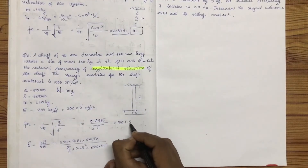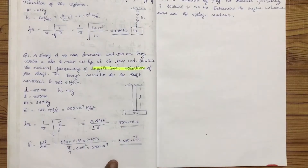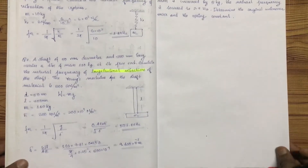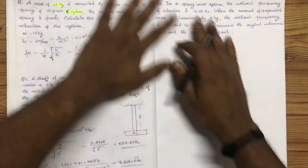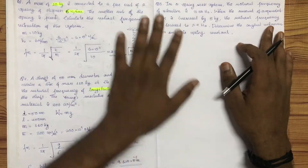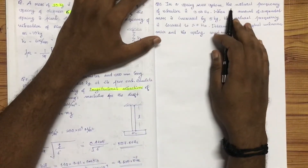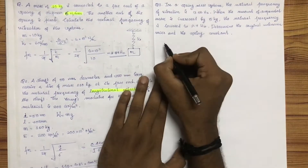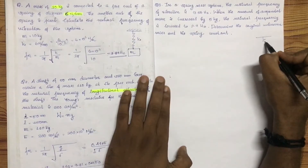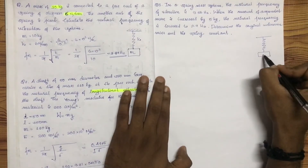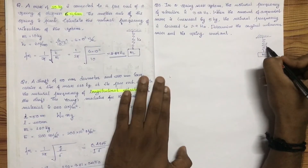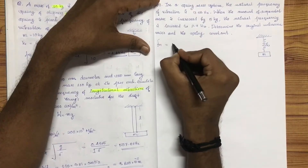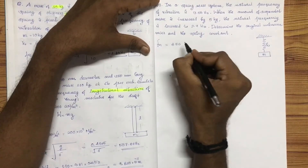If you have a simple answer you can present it in a university exam. From the GATE point of view, the natural frequency of vibration is 3.56 Hz for this spring-mass shaft system.